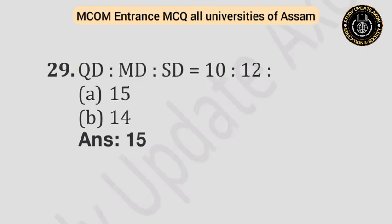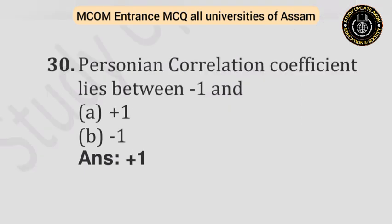Question number twenty-nine: If QD is 2, MD is 2, then SD equals — Option A: 14. Option B: 15. Answer is 15. Question number thirty: Pearson's correlation coefficient lies between minus one and — Option A: Plus one. Option B: Minus one. Answer is plus one.